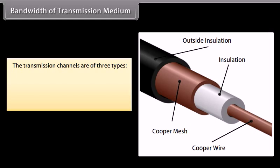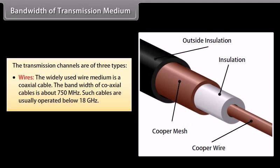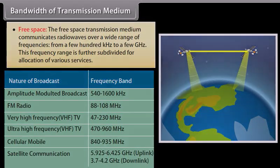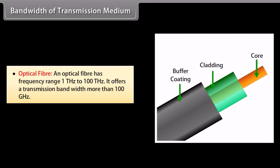Bandwidth of transmission medium: The transmission channels are of three types. Wires: The widely used wire medium is a coaxial cable. The bandwidth of coaxial cables is about 750 MHz, and such cables are usually operated below 18 GHz. Free space: The free space transmission medium communicates radio waves over a wide range of frequencies, from a few hundred kilohertz to a few gigahertz, further subdivided for allocation of various services. Optical fiber: An optical fiber has a frequency range of 1 THz to 100 THz and offers a transmission bandwidth of more than 100 GHz.